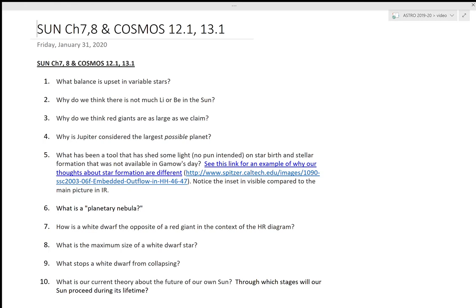So the first one, this is really for chapter 7, from birth and death of the Sun: what balance is upset in variable stars? In class I had mentioned that when a star uses up or diminishes the amount of hydrogen in its core, then the fusion process isn't as self-sustaining.